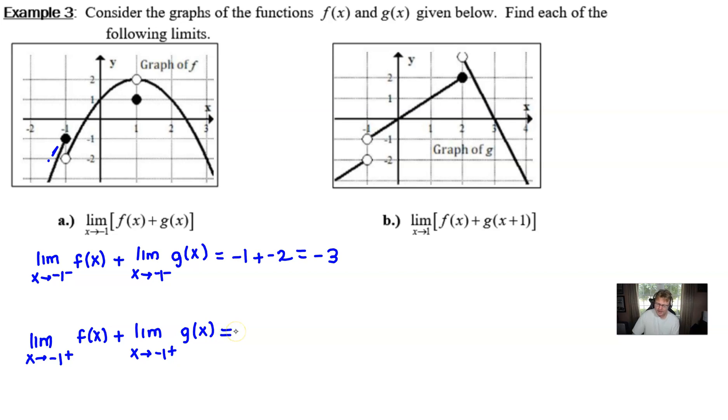So we do the same thing with the right-hand side limits. We're going to approach negative 1 on the f graph, this time from the right side, and we get a negative 2 answer. Remember, it doesn't matter if this is an open circle or a closed circle for the purpose of the limit. For g(x), as we approach negative 1 from the right side, we get closer and closer to a y value of negative 1. And lo and behold, if we add those together, we get negative 3. If you remember from a previous discussion that we had, if the two one-sided limits agree, that means the double-sided limit, which was our original problem, has an answer. And that answer would be the limit upon which both of those agreed. And so the answer to part A is negative 3.